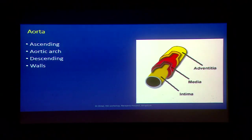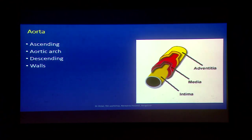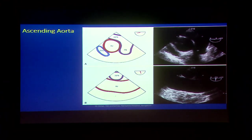The aorta with ascending aorta, arch, descending, and the walls. The ascending aortic diameter should not exceed 4 cm or 40 mm. Nowadays a lot of things are being told to move into per meter square, so ascending is recommended up to 21 mm per meter square, descending up to 60 mm per meter square.